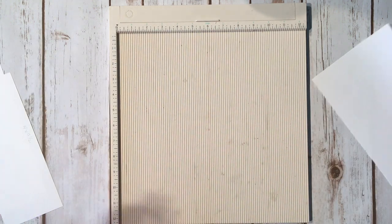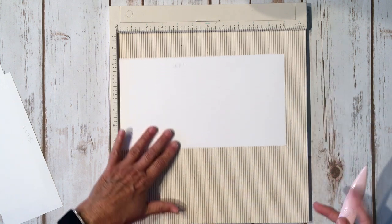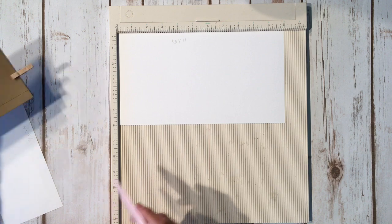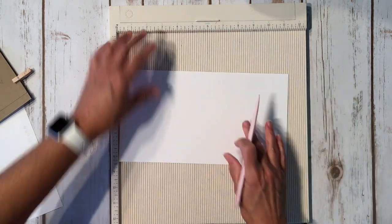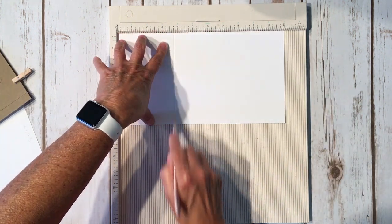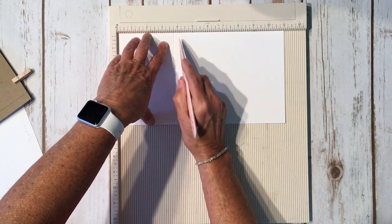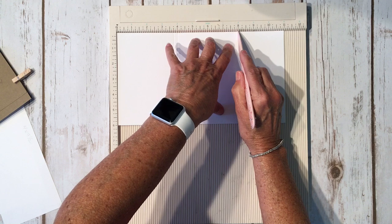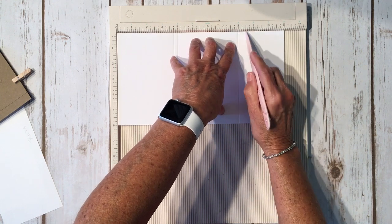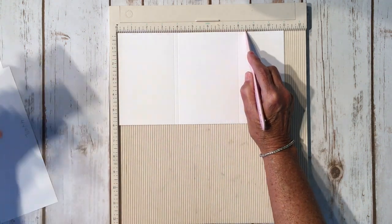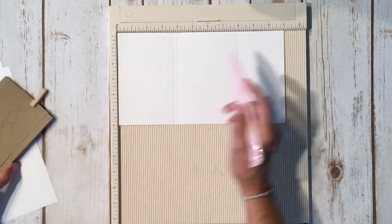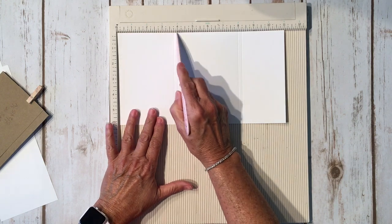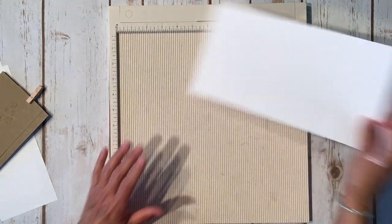The first thing we're going to do is score the base piece. We're going to put it in here, 11 inches at the top, and our first score mark is going to be at three and three quarters. Let me turn over this so you can see it better. Three and three quarters, and then we're going to score again at four, then we're going to score again at eight, and then we're going to score again at eight and a quarter like this. So we have three and three quarters, four, eight, and eight and a quarter.